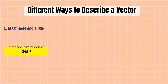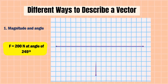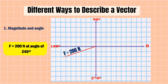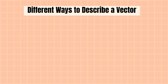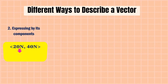Another example: force is equal to 200 newtons at an angle of 245 degrees. In our Cartesian plane, an angle of 245 degrees is found in the third quadrant. So this is our vector with a force of 200 newtons at an angle of 245 degrees. Another way to describe a vector is by expressing it by its components.